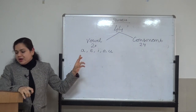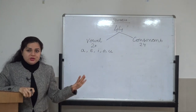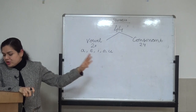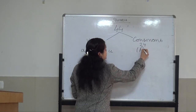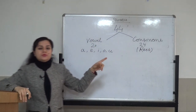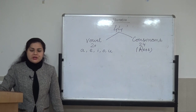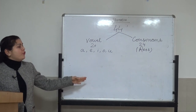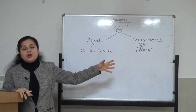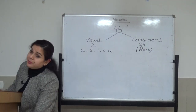Vowel sounds are those sounds which can be produced without obstruction — there is no obstruction when you say them. Consonant sounds are the rest of the sounds; they cannot be produced without obstruction — there will definitely be obstruction when you produce them. Now first of all we would like to start with consonant sounds. There are 24 consonant sounds.